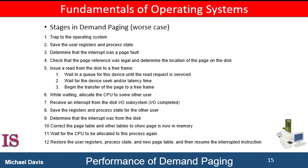Demand paging can significantly affect the performance of a computer system. As long as no page fault occurs, the effective access time equals the memory access time. However, if a page fault occurs, it is necessary to first read the relevant page from secondary storage and then access the desired instruction. To compute the effective access time, we must know how much time is needed to service a page fault. A page fault causes the following sequence to occur.